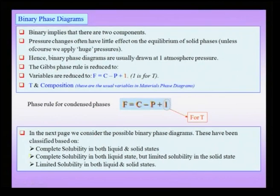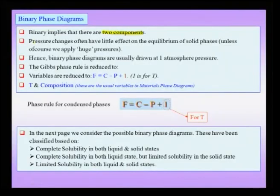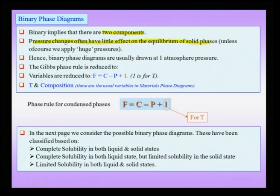Let us proceed to understand binary phase diagrams. The word binary implies two components, and these two components can be elements like copper and nickel, or even compounds like alumina and chromia. Pressure changes often have very little effect on phase equilibria unless we are dealing with very high pressures not normally encountered in technological processing. Therefore, we draw binary phase diagrams at 1 atmosphere pressure, and the Gibbs phase rule reduces to F equals C minus P plus 1, where the 1 is for temperature.